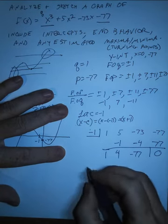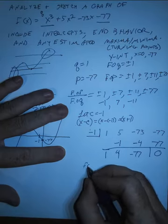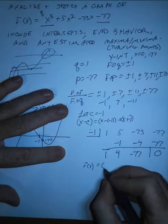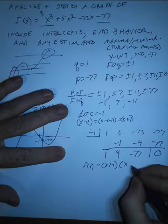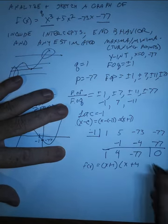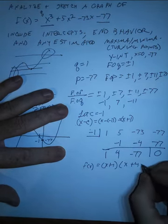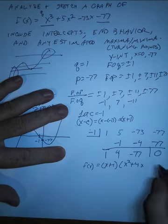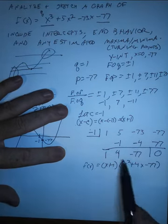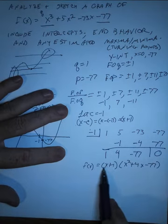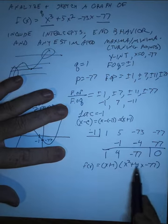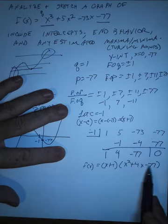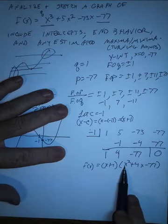we can now say that our original polynomial f of x, we can write it in a partially factored form. x plus one times x squared plus four x minus 77. And you notice that this residual, this is a linear binomial term. This is a quadratic trinomial. This trinomial we can factor. We've got lots of tools for factoring quadratic equations. We could use the quadratic formula. We could use the AC method.